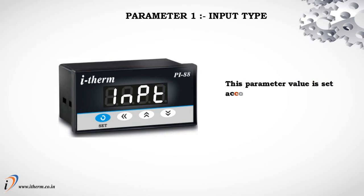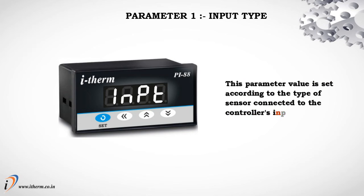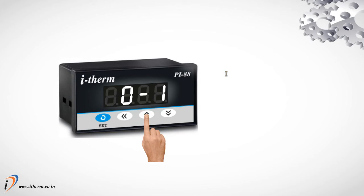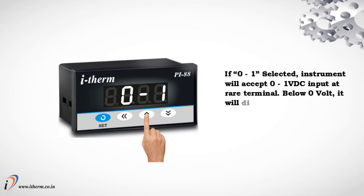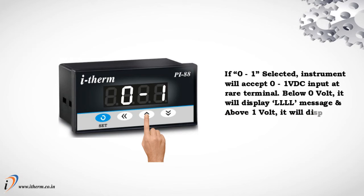Parameter 1: Input Type. This parameter value is set according to the type of sensor connected to the controller's input terminals. If 0 to 1 is selected, the instrument will accept 0 to 1 volt DC input at the rear terminal.